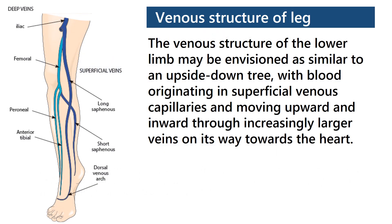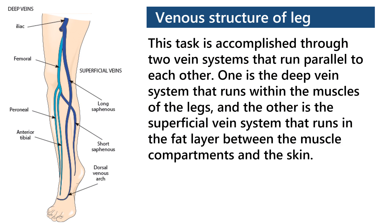First, we have to understand the venous structure of the leg. The venous structure of the lower limb may be envisioned as similar to an upside-down tree, with blood originating in superficial venous capillaries and moving upward and inward through increasingly larger veins on its way towards the heart. This is accomplished through two vein systems that run parallel to each other: the deep vein system that runs within the muscles of the legs, and the superficial vein system that runs in the fat layer between the muscle compartments and the skin.